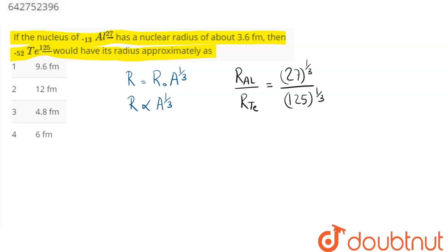So radius of aluminum is given to be 3.6 femtometer divided by radius of tellurium. Cube root of 27 is 3 and cube root of 125 is 5. Hence radius of tellurium comes as 1.2 into 5, which is 6 femtometer. So 6 femtometer, option number 4 is our correct answer.